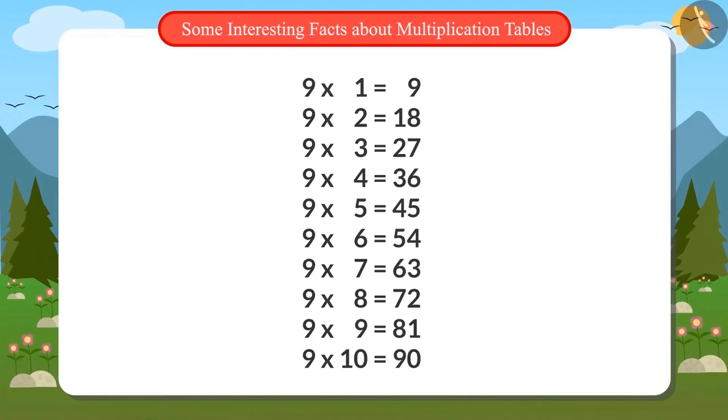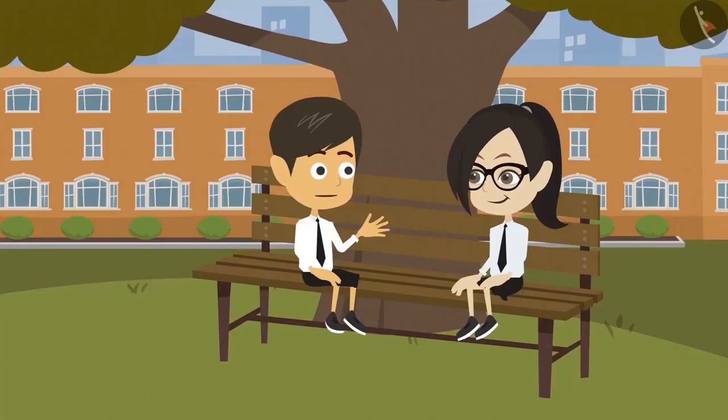This is the table of 9. The next number in the series is 18. If we add both digits of the number, 1 and 8, the answer is 9. Similarly, if we add the digits of any other number from the multiplication table of 9, the answer will be 9.